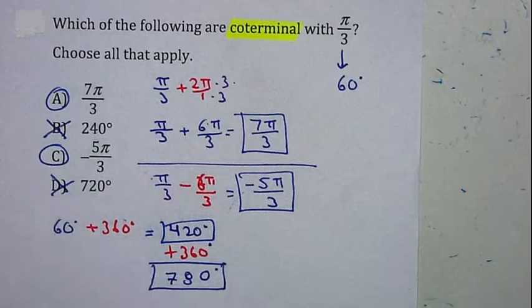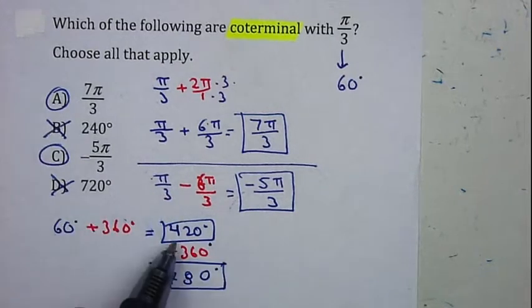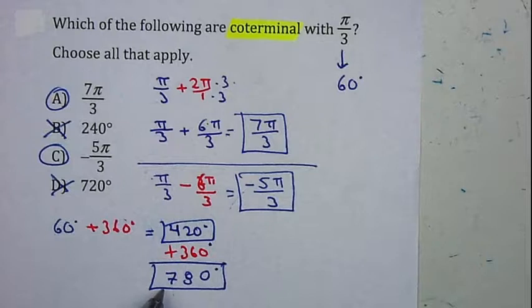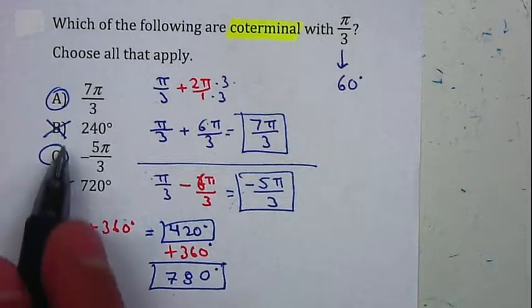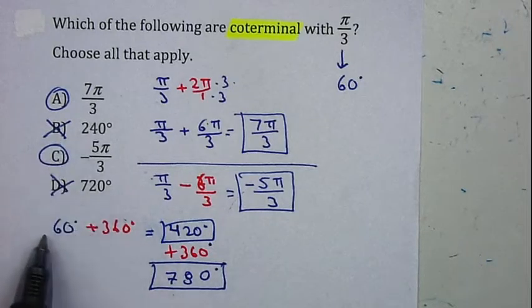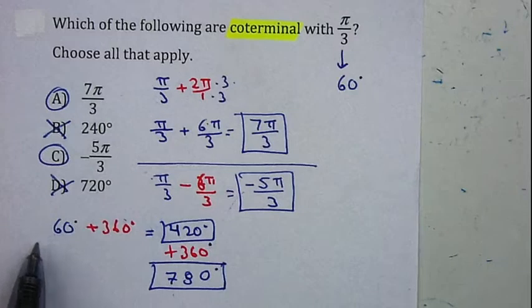So your only answers are A and C. If 420 was listed, it will also be an answer. If 780 was listed, it will also be an answer. And there are no negatives in there, so we don't need to subtract 360. Otherwise, negative 300 will also be coterminal. But in this case, your answers are A and C.